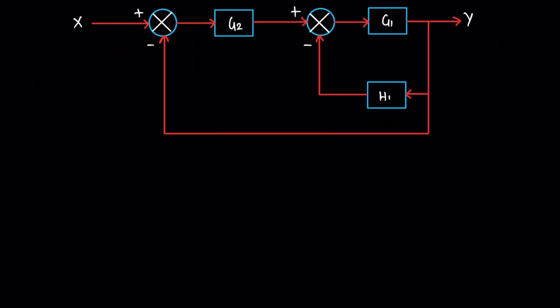The gain G is equal to y divided by x, where the numerator is the forward path gain and the denominator is the feedback gain.